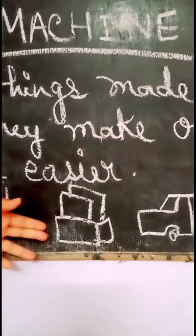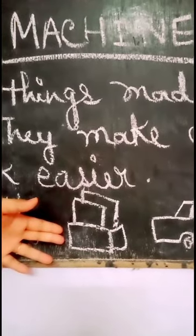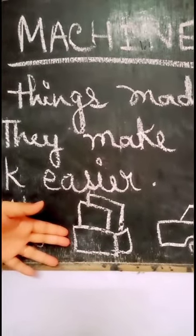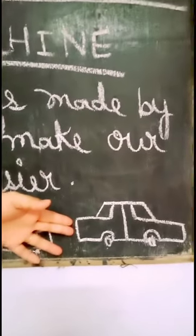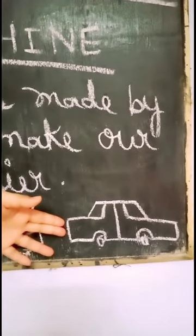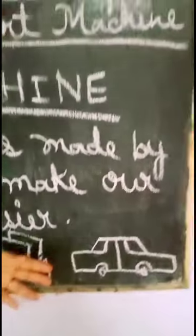A toaster is a machine used to make bread slices crisp and brown. A car is a machine used to travel from one place to another. We use a car to go outside the house.